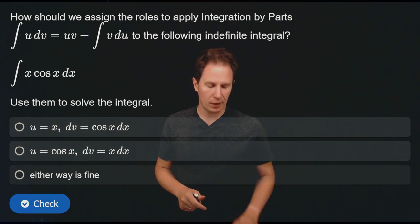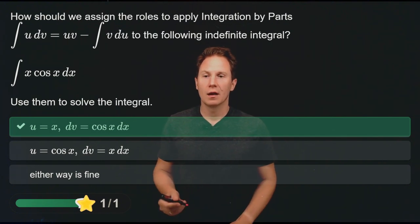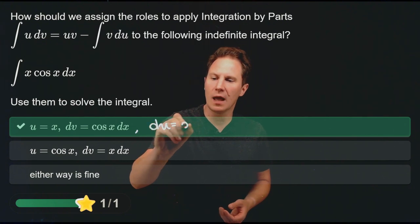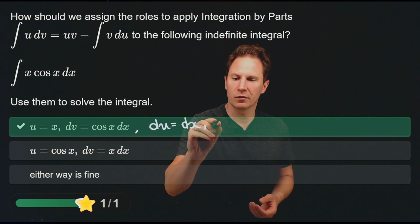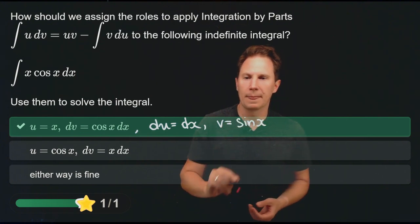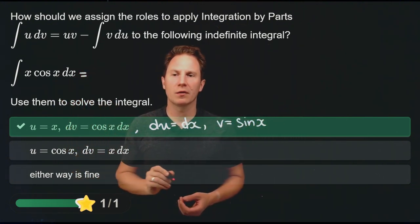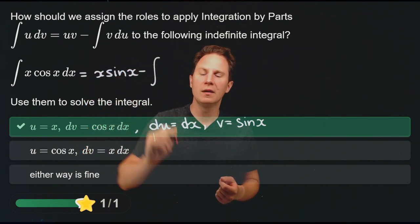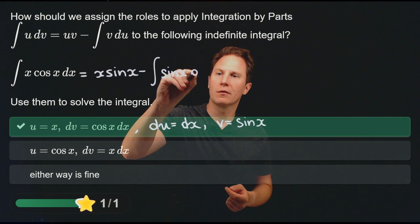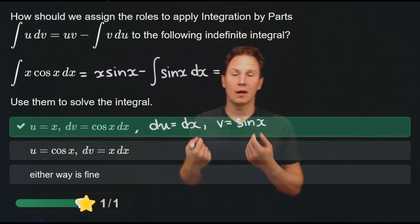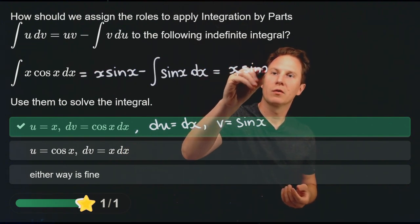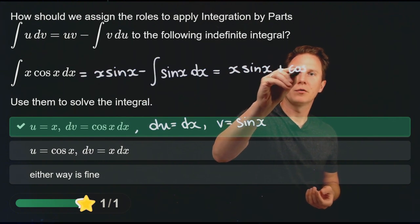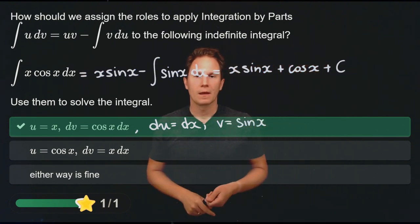For the next question, what roles should we assign to u and dv in the integral of x·cos(x) dx? Setting u equals x and dv equals cos(x) dx means du is dx and v is sin(x). Integration by parts gives x·sin(x) minus the integral of sin(x) dx. Evaluating that second integral: x·sin(x) minus (−cos(x)), which gives x·sin(x) plus cos(x) plus constant c.